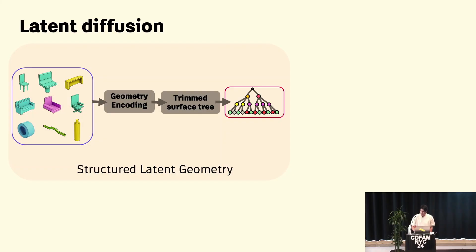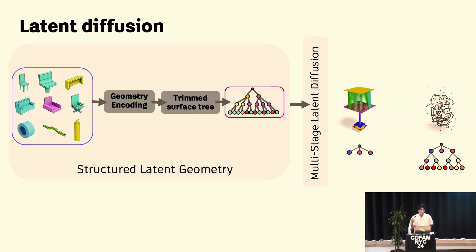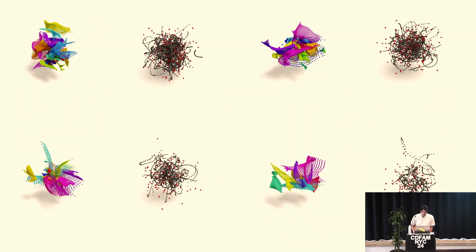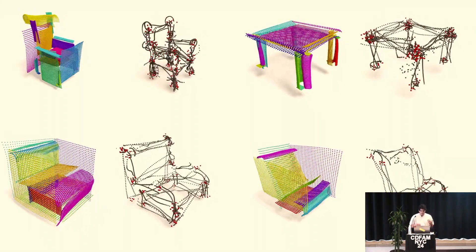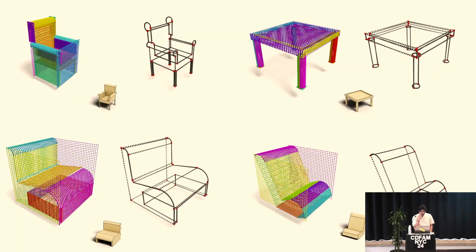Those are some of the dirty little secrets for getting B-reps into a neural network. Once we have that, we run it through a latent diffusion model. What you're looking at in the animation is denoising those surfaces, and likewise denoising the edges — here of a lamp — and then through a post-process we rebuild that solid model.